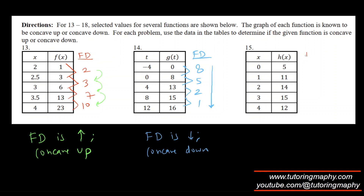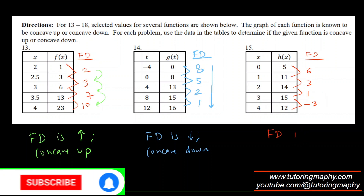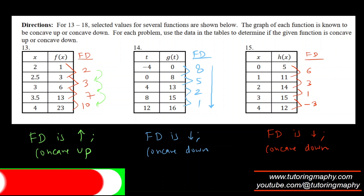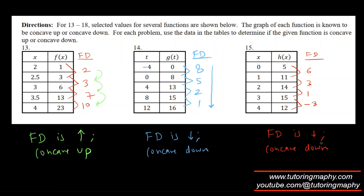For the last concavity example in this set: first differences are 11−5=6, then 3, 1, and −3. The values go from 6 to 3 to 1 to −3 — all decreasing, and note that −3 is smaller since it is negative. So the first difference is decreasing, and this function is concave down.